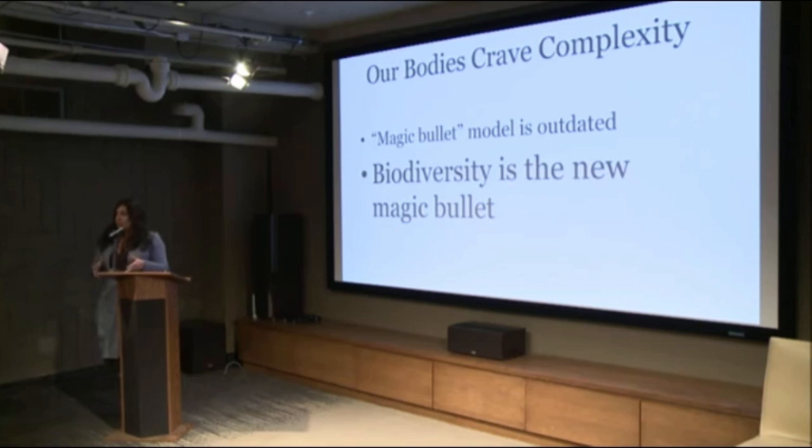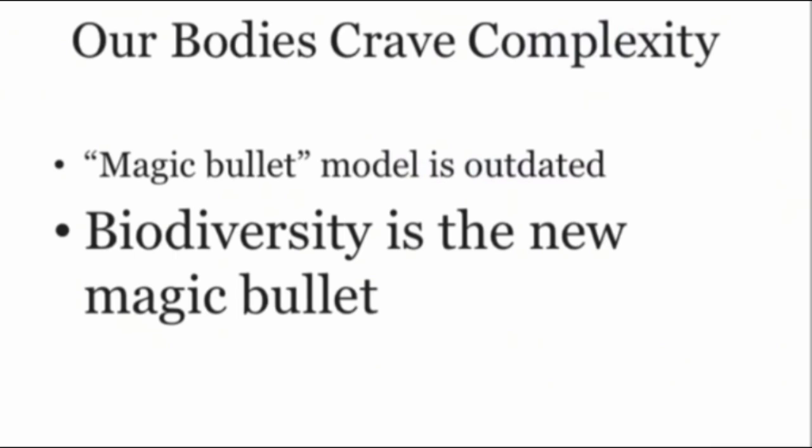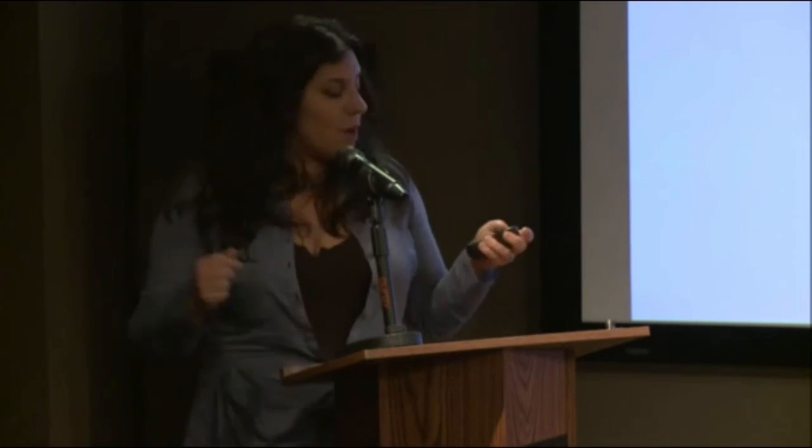Our bodies actually crave complexity, and our immune systems are not like warriors that we thought, but kind of more meet-and-greet — they like to meet lots of different organisms all the time, learning and developing that way. I think the magic bullet model, like antibiotics, vaccines, or any of these things, is really outdated because biodiversity is what we're learning is the new magic bullet, if there were one.